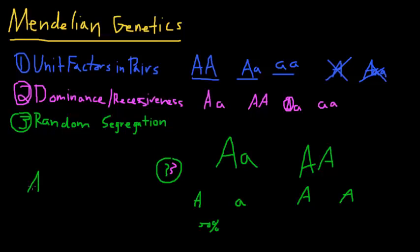So if I crossed a homozygous dominant with a heterozygous parent, the offspring has a 50% chance of being heterozygous.